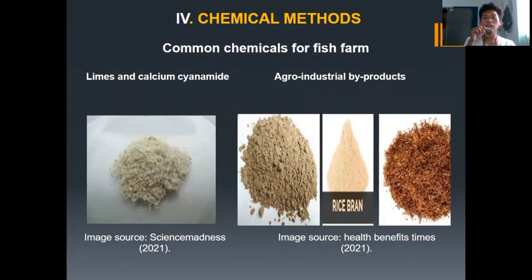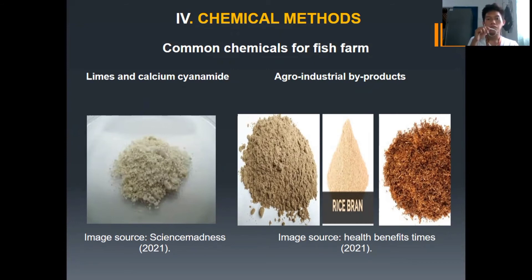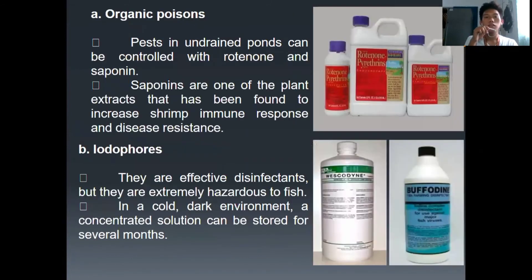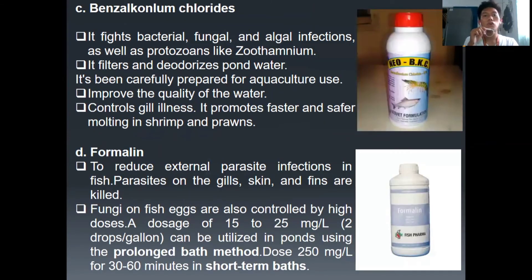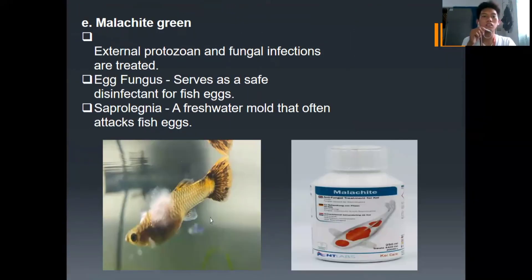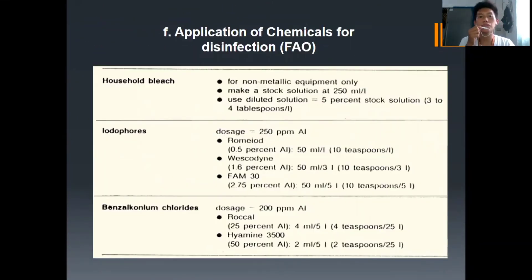We have now the chemical methods. Here we have the common chemicals for fish farms: limes and calcium cyanamide, agro-industrial by-products, organic poisons, iodophores, benzalkonium chlorides, formalin, malachite green, and the application of chemicals as disinfectants.